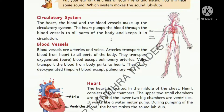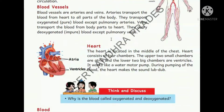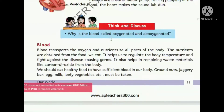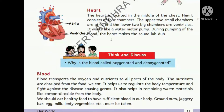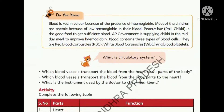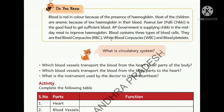Blood vessels supply oxygenated blood to body parts and gather deoxygenated blood back. There are two types of blood vessels: arteries and veins. Arteries carry only oxygenated blood to body parts, except the pulmonary artery. Veins carry deoxygenated blood from body parts to the heart, except the pulmonary vein. The heart has four chambers and makes a 'lub-dub' sound when pumping.